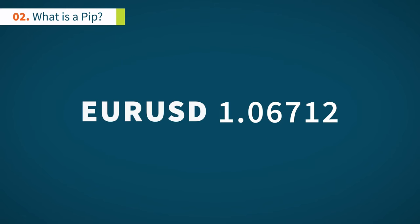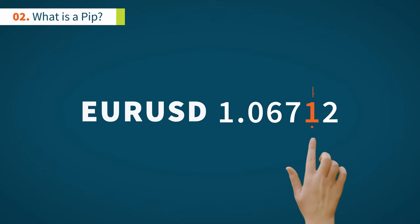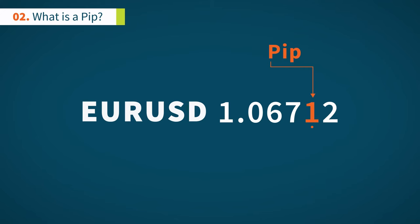Most currency pairs are measured to five decimal places. For pairs like EURUSD, GBPUSD, etc., a PIP corresponds to the fourth decimal digit.